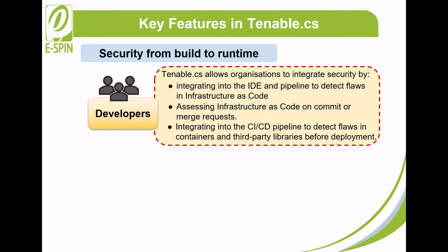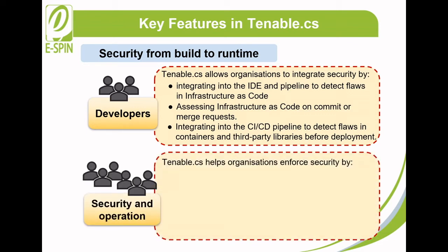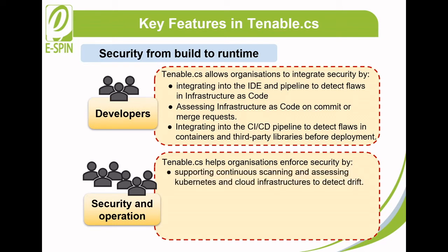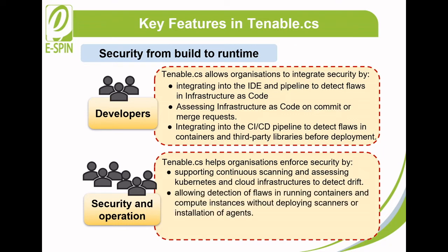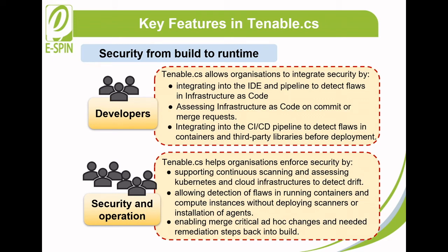Integrating into the CI/CD pipeline to detect flaws in containers and third-party libraries before deployment. For the security and operations team in the run time phase, Tenable CS helps enforce security by supporting continuous scanning and assessing Kubernetes and cloud infrastructure to detect drift. It allows detection of flaws in running containers and compute instances without deploying scanners or installing agents, and enables merging critical ad-hoc changes and remediation steps back into build.